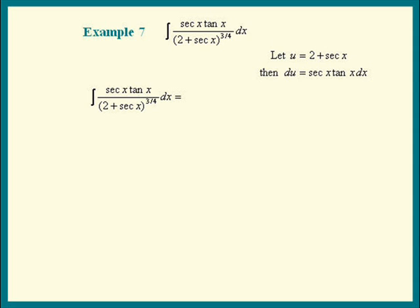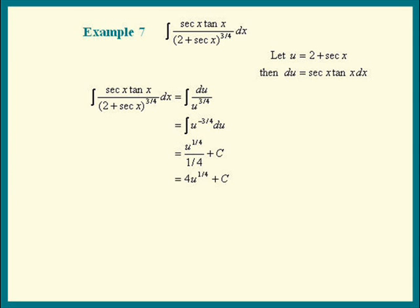On the top we have du exactly. On the bottom we have u raised to the 3 quarter power. To use the power rule, it has to be in the form u to the n du. That means the power here is negative 3 over 4. Apply the power rule: add 1 to the power and divide. Plus c. Turn the 1 over 4 upside down — we get 4 times u to the 1 fourth plus c. Substitute the x's back in, and we're done.